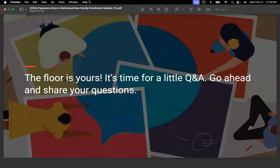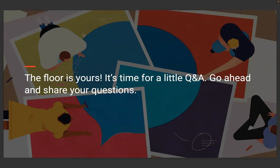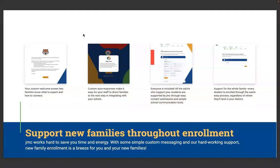That's a very high-level view of some of those features that are involved. Providing welcome screens to let families know what to expect and how to connect, customized auto-responses make it easier for the front office staff and families to know exactly where they are in the process. Front office staff can quickly and easily communicate those needs through on-screen prompts. Any additional contacts and additional students can be quickly and easily added, and we offer support for the whole family. Every student gets enrolled through the same easy process.